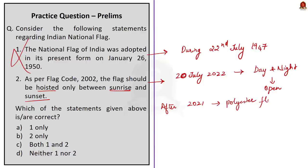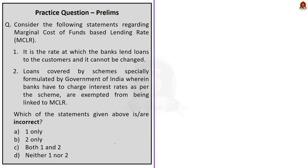An additional fact: before 2021, machine-made flags and polyester flags were not allowed, but now they are. Since the question asks you to choose the correct statements and both are incorrect, the correct answer is neither 1 nor 2. Now this next question is about MCLR. First statement: it is the rate at which the bank lends loans to the customers and it cannot be changed. This is incorrect because we saw that RBI can change the MCLR. Second statement: loans covered by schemes specially formulated by the government of India wherein banks have to charge interest rates as per the scheme are exempted from being linked to MCLR. This statement is correct — those schemes have a separate interest rate and banks have to charge as per that. So statement 2 is correct. The question asks to choose the incorrect statements, so the correct answer is option A — 1 only.